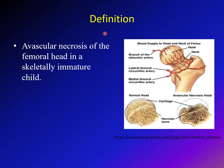So what is Perthes disease? Perthes disease is avascular necrosis of the femoral head in a skeletally immature child. If avascular necrosis happens in a skeletally mature child, that's not Perthes disease — that's called AVN or avascular necrosis. But when this condition, which means disturbance of the blood supply to the femoral head, happens in a skeletally immature child, that's when we consider it Perthes.